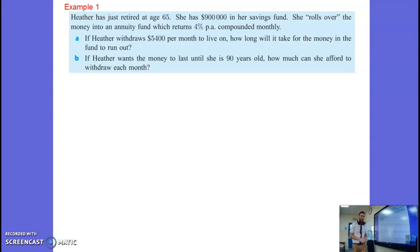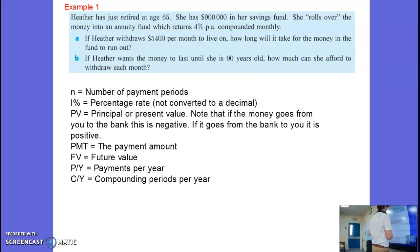Carrying on, let's go through an example. Heather has just retired at age 65. She has $900,000 in her savings fund. She rolls that into an annuity fund that's got 4% interest per annum compounded monthly. Okay if she withdraws $5,400 per month, how long will it take for the money to run out? So what we're looking at here, let's just see where we're getting this information from.